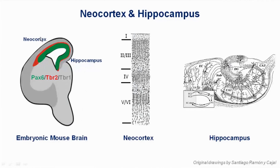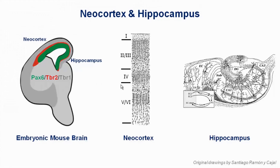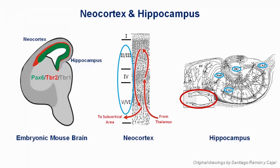The hippocampus and the neocortex are the two major parts of the cerebral cortex. They arise from the dorsal telencephalum, and they are both defined by a similar set of transcription factors. However, as development proceeds, they diverge substantially both structurally and functionally.